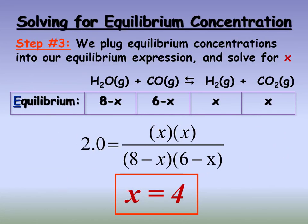You'll get two possible solutions — 4 and 22. It should make sense that x can't be 22, because that would mean we would have negative numbers of water molecules and carbon monoxide molecules at equilibrium. When you solve a quadratic you get two solutions, and you have to figure out which one makes sense. In this case, we eliminate 22 and stick with x = 4.